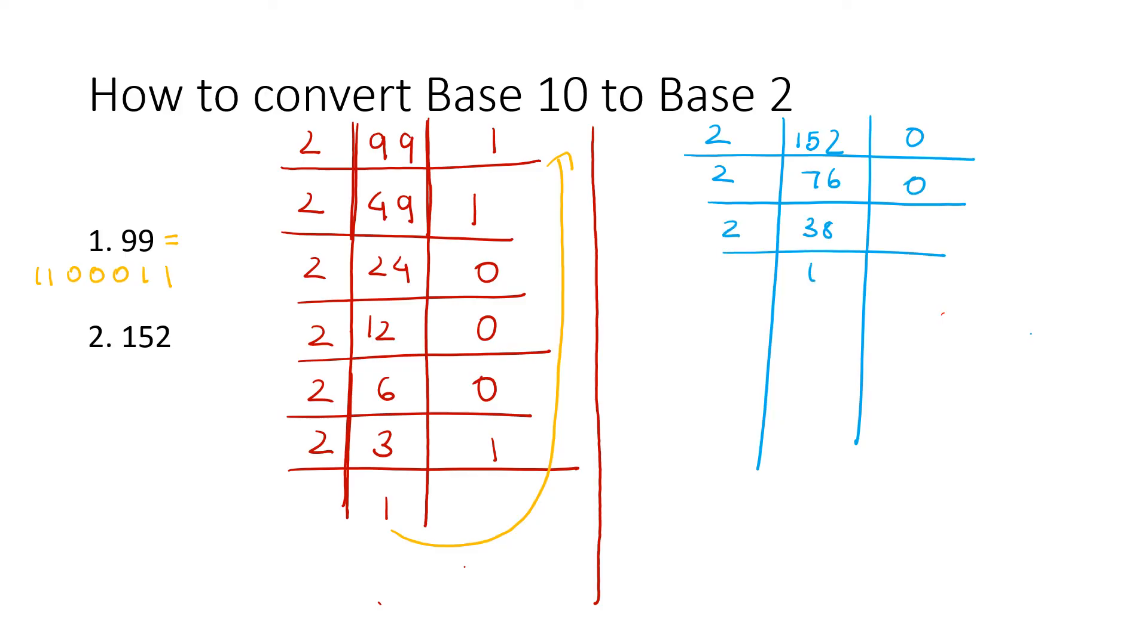2 goes for 19, remainder is 0. Now this is indivisible. We get 9 and remainder 1, 2, 4, and 1.